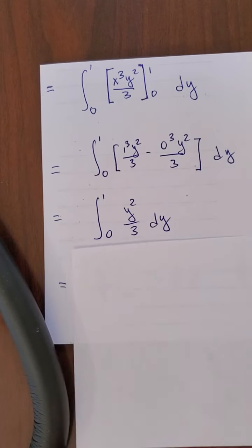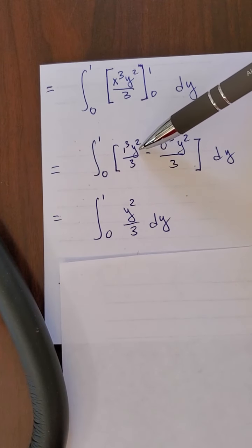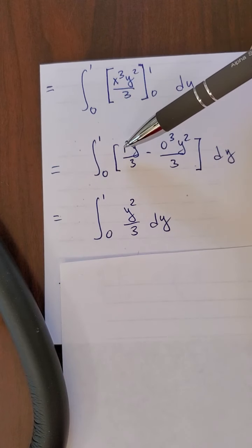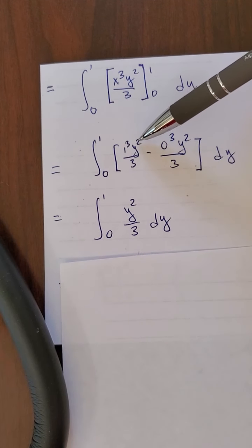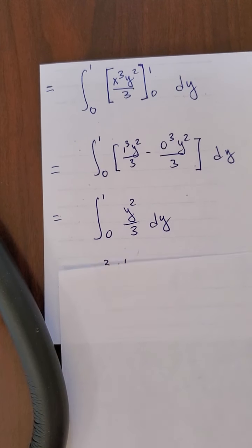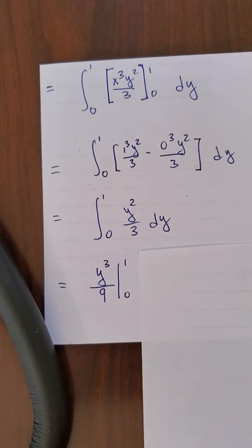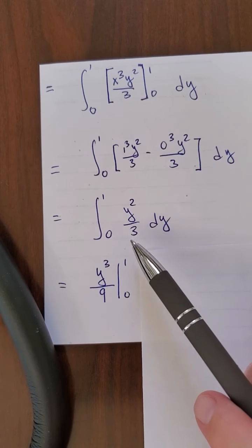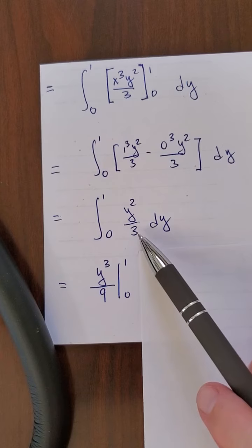and that simplifies to just y squared over 3, because that's 0, the whole thing disappears. That 1 is just 1, so it's y squared over 3, and I'm integrating this now dy from 0 to 1, and that's going to give me y cubed now over 9. Why 9? Because it's really y cubed over 3, but I already have a 3, so the 3 times 3 is 9.